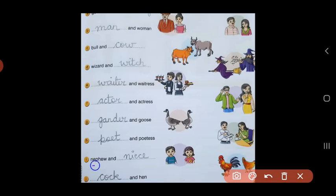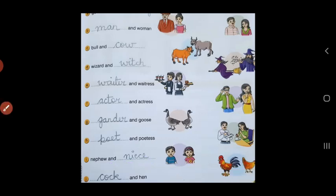Nephew is the male, so masculine gender. When it's a girl, we call her niece, which will be the feminine gender. And the last one — cock is the masculine gender.